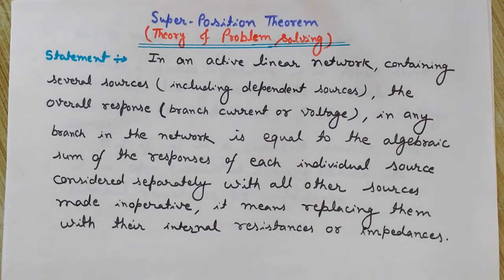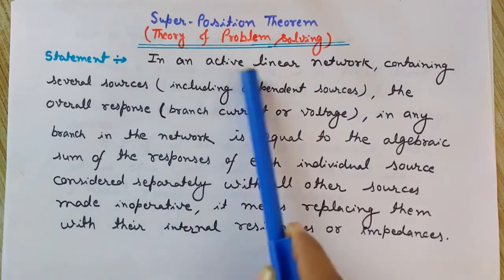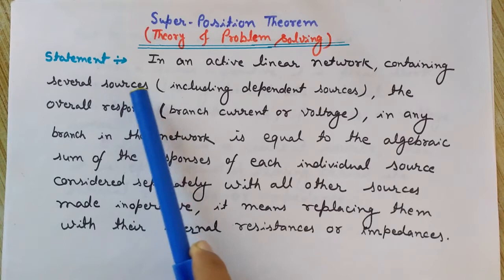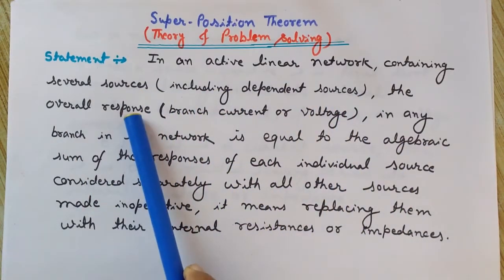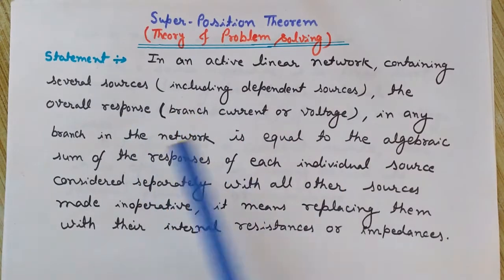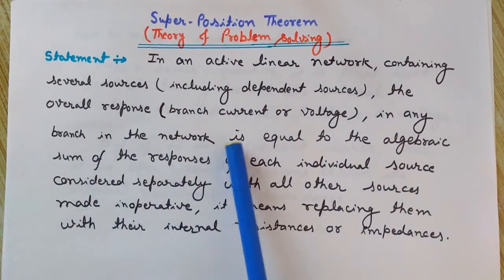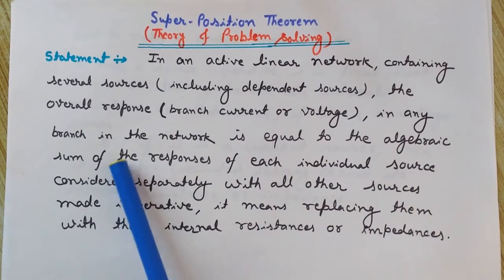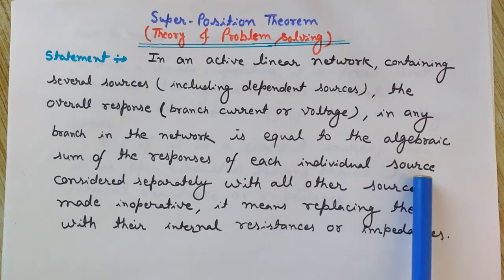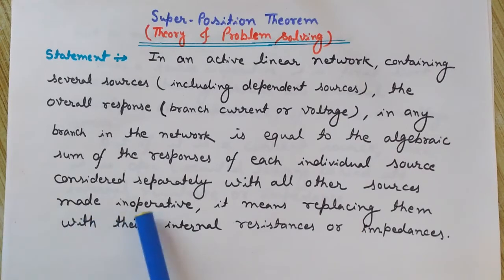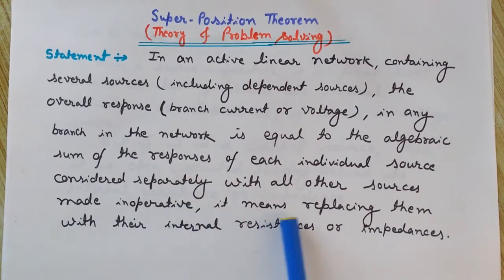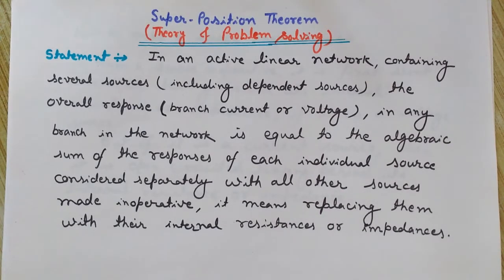Now the formal definition: in an active linear network that contains several sources — these sources may be dependent sources also — the overall response, meaning the branch current or voltage in any branch of the network, is equal to the algebraic sum of the responses of each individual source considered separately, with all other sources made inoperative.